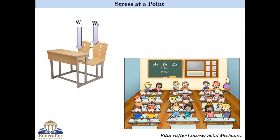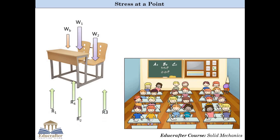Firstly, the weight of the students, say W1 and W2, will act in the downward direction. The self weight of the bench, say WB, also acts in the downward direction. Additionally, there are reaction forces provided by the floor of the classroom in the vertical upward direction, say R1, R2, R3 and R4.